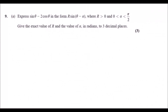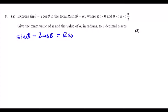Okay, number nine. Here we need to express sin θ minus 2cos θ in the usual R sin(θ - α) form. When you start with 'express' and then 'in the form', it means the two expressions are equal. So straight off the bat: sin θ - 2cos θ must equal R sin(θ - α).